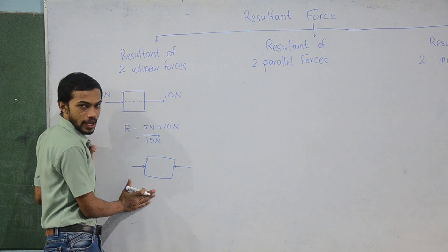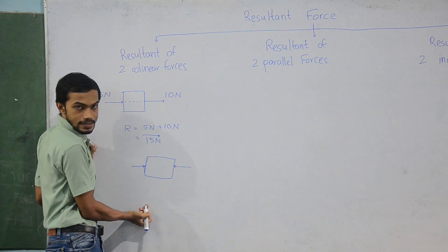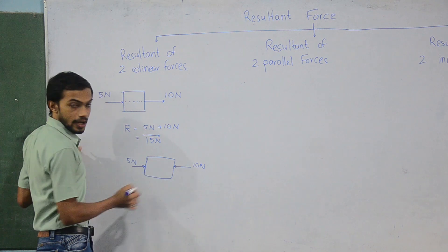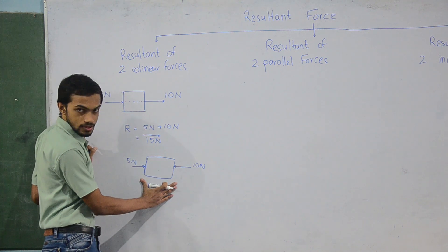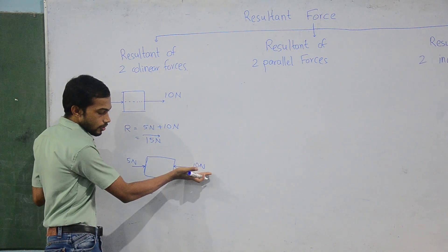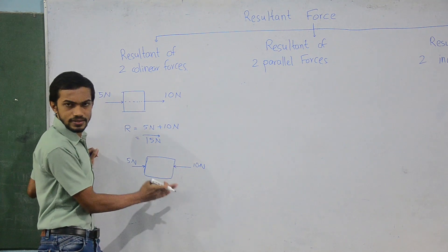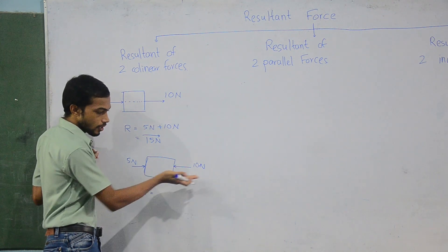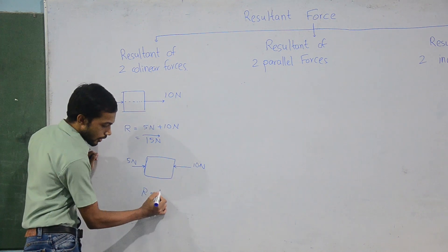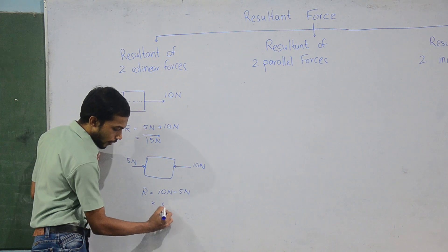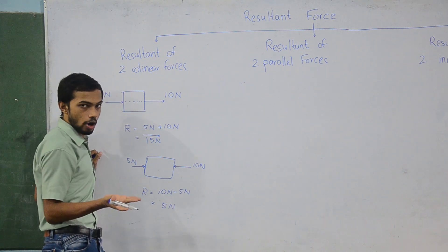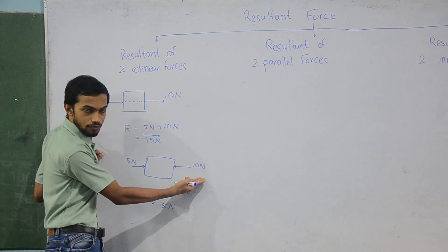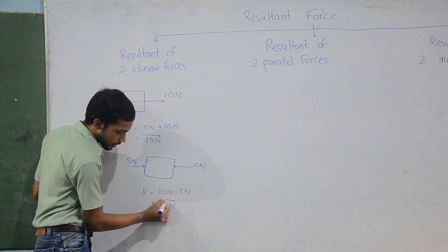Now if the direction of the 10 newtons force is reversed — 10 newtons towards the left and 5 newtons towards the right — the resultant force acts in the direction of the larger force. You subtract the smaller from the larger: 10 newtons minus 5 newtons gives 5 newtons. The direction of the resultant force is the direction of the larger force, which is from right to left.